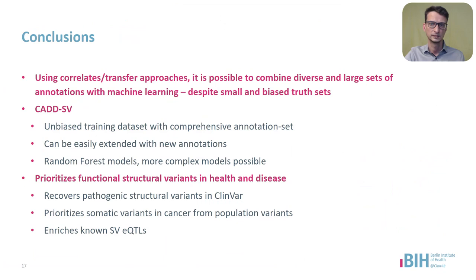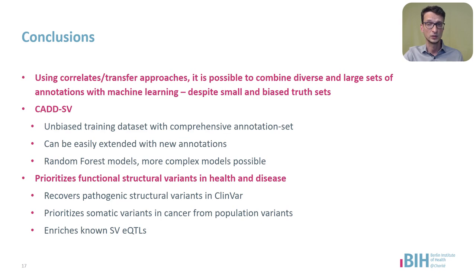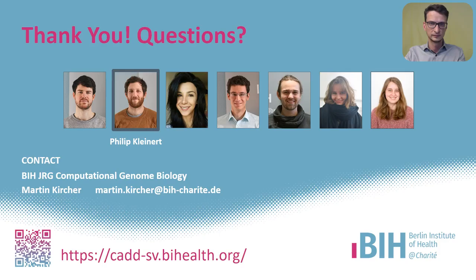To summarize: inspired by the combined annotation-dependent depletion framework, we developed a model training approach for structural variants that overcomes the biases and small size of clinical truth sets. We developed CAT-SV as an easy-to-use tool for scoring the effects of insertion and deletion events in the genome, and showed that it can identify known pathogenic variants, but also prioritizes somatic cancer variants and enriches for SV-eQTLs. I would like to thank all members of my lab and especially acknowledge my PhD student Philip Kleinert, who performed most of the work. Thank you for listening and I look forward to your questions.